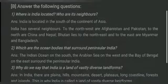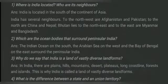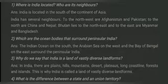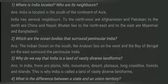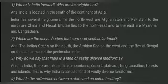Look at the third question: why do you say that India is a land of vastly diverse landforms? In India there are plains, hills, mountains, desert, plateaus, long coastline, forests, and islands. This is why India is called a land of vastly diverse landforms.